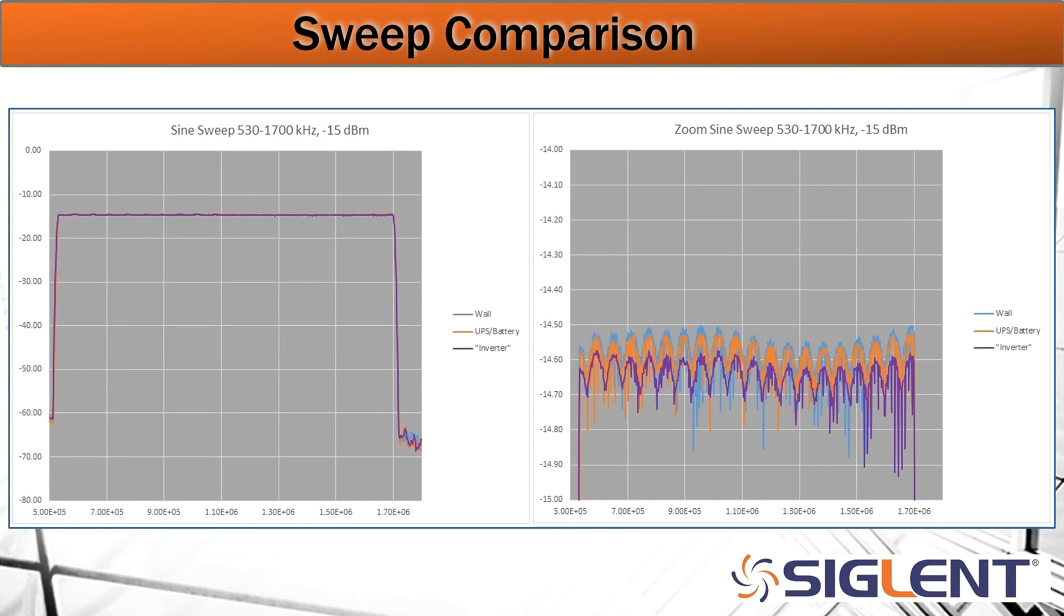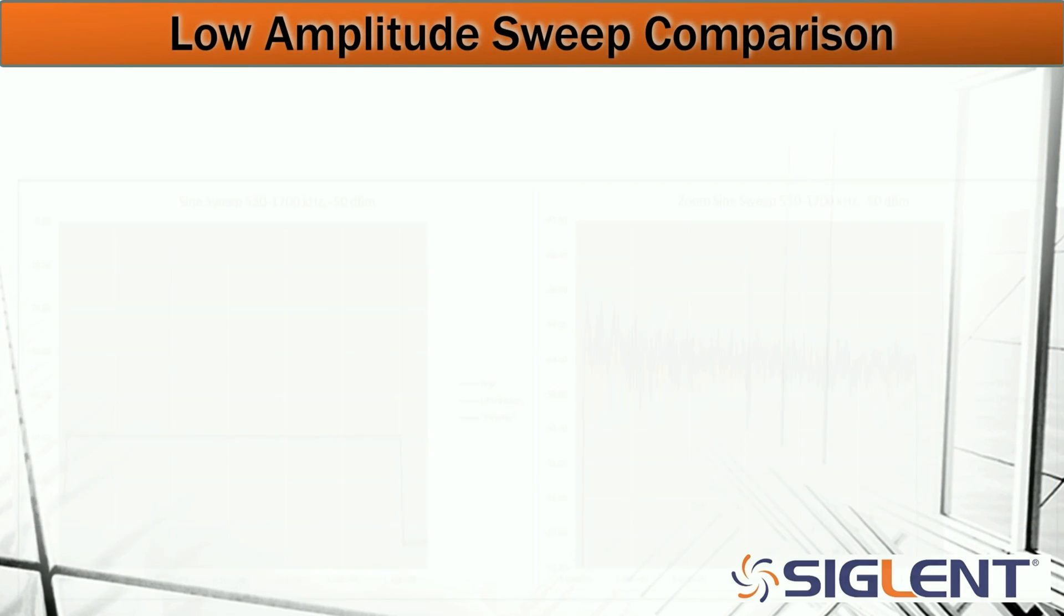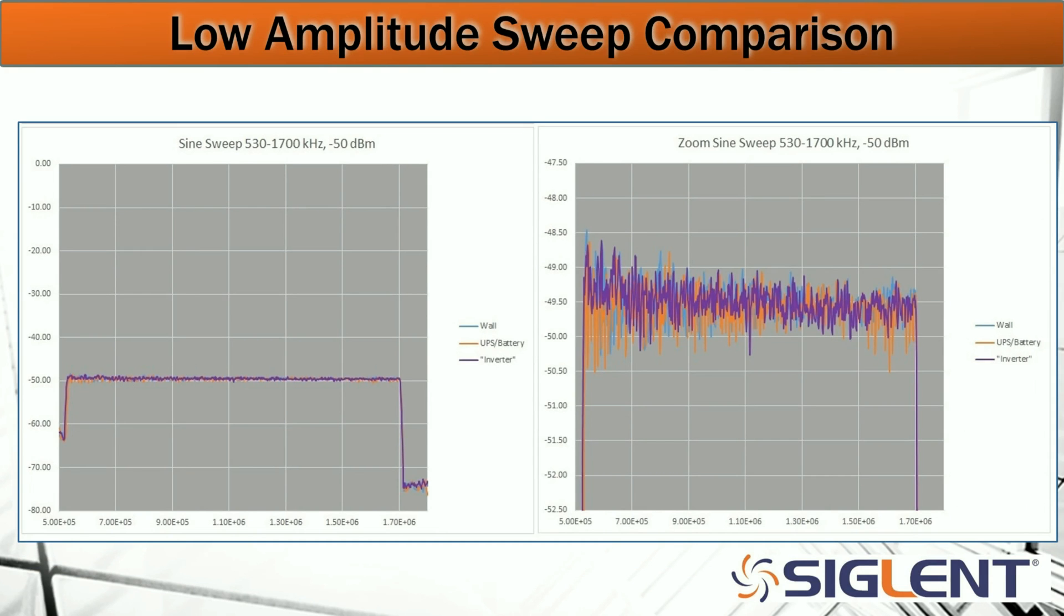Here we've got the blue trace is the wall data or mains data. The orange is the UPS or battery powered and the purple is the inverter collected data. Now that was the minus 15 dBm and this is the minus 50 dBm sweep. And you can see there's quite a bit of correlation between all three different power modes being used on the analyzer. So I feel pretty good about the correlated data and we have a few more examples coming up.